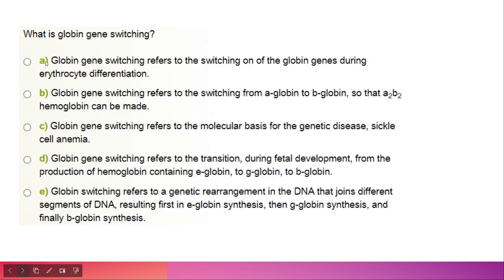What is globin gene switching? The correct answer is option D: globin gene switching refers to the transition during fetal development from the production of hemoglobin from epsilon (ε) to gamma (γ), and gamma to beta (β). Remember the sequence: ε to γ, and γ to β.